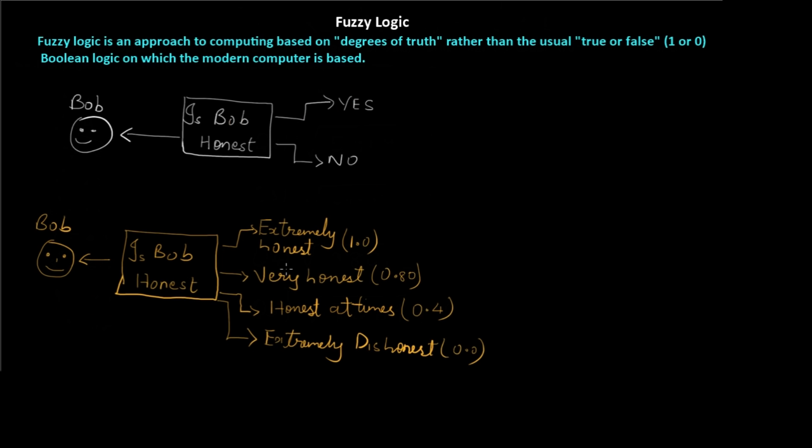So what is fuzzy logic? Let's see a theoretical definition. As you can see on the screen, fuzzy logic is an approach to computing based on degree of truth rather than the usual true or false boolean logic. In boolean algebra we have only two values, true and false or zero and one. But in fuzzy logic we have multiple values based on degree of truth, or the degree to which a certain value is true or false.